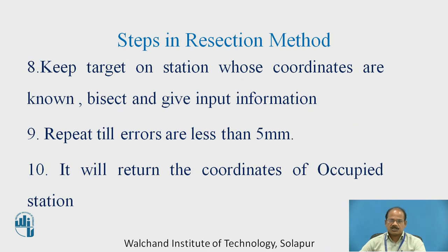Keep the target on the station whose coordinates are known, bisect it, and give input information. Repeat this until the errors shown by the instrument are acceptable — less than 5 mm. The instrument will then return the coordinates of the occupied station. Once those are known, you can proceed further with the remaining steps of the total station survey, taking observations by holding the reflector at each subsequent location.